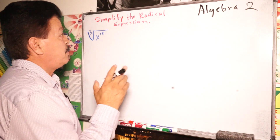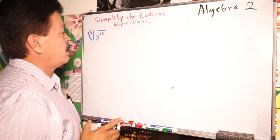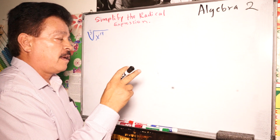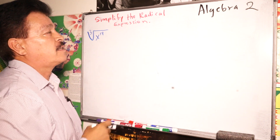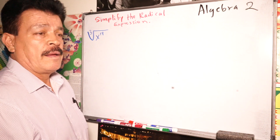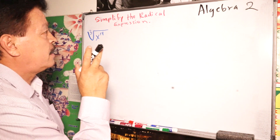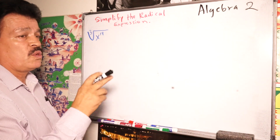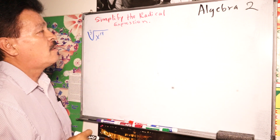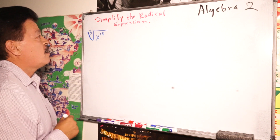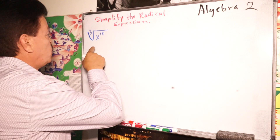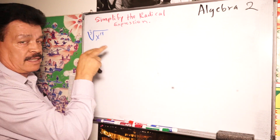Our class for today is simplifying radical expressions. It is the same topic from algebra 1 that I showed you last class, but this is algebra 2 — it is one degree more difficult.